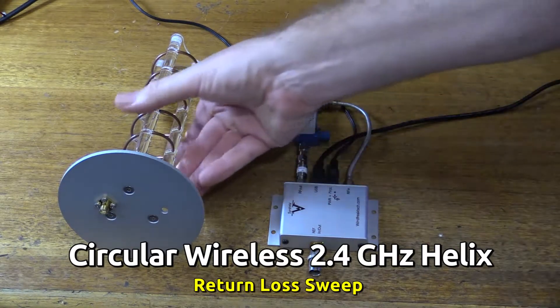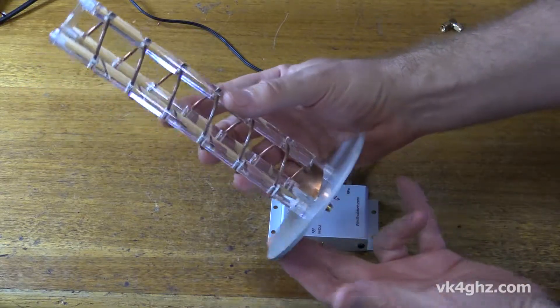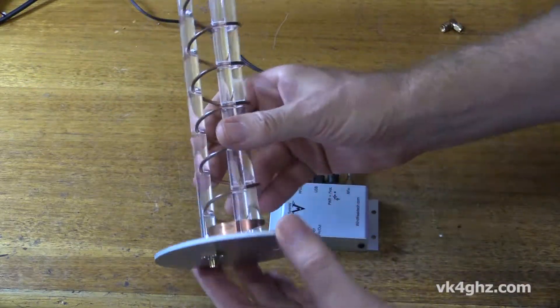Hey guys, today we're going to take a look at a return loss sweep on a circular wireless 2.4 gigahertz helix antenna. This is a six and a half turn helix.